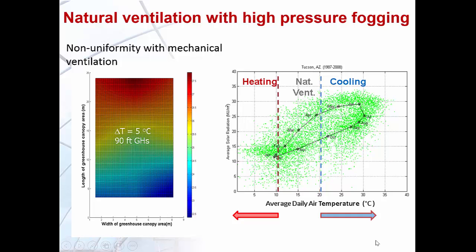Similar graphs can be created for other regions. In temperate or mild climates, there is even more potential for naturally ventilated greenhouse systems, which may be the only cost-effective and efficient way to cool a greenhouse in those climates.